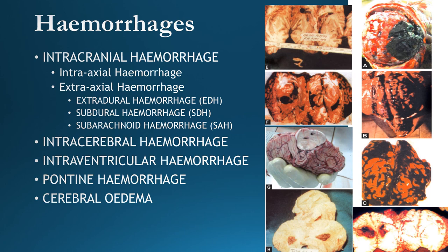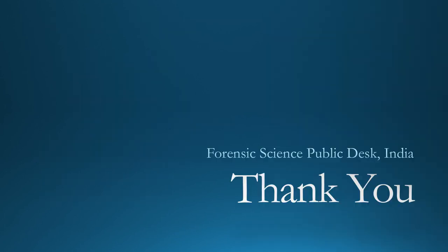Intraventricular hemorrhage can be seen when the brain is dissected into two hemispheres. Pontine hemorrhage occurs near the brain stem, pons, and medulla. Cerebral edema results from heavy bleeding causing increased pressure inside the brain due to leakage of CSF into the cranial cavity. These are the hemorrhages seen in brain injuries. Future lectures will cover regional injuries related to the spine, spinal cord, limbs, abdomen, chest, and thoracic region.